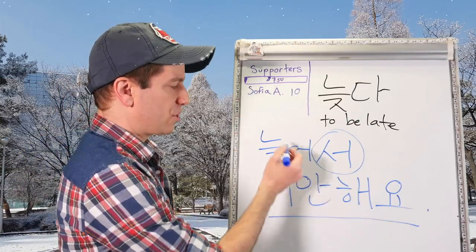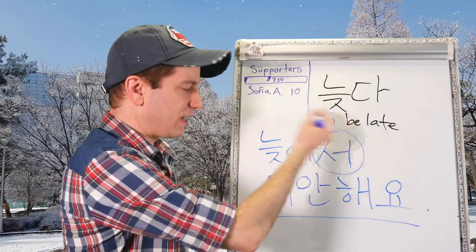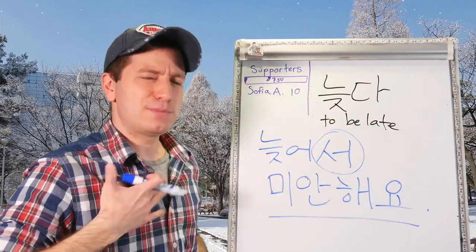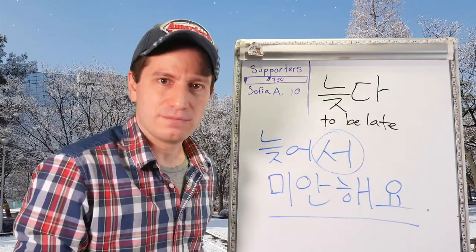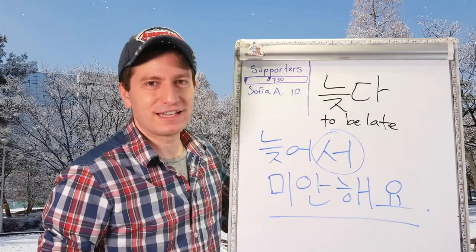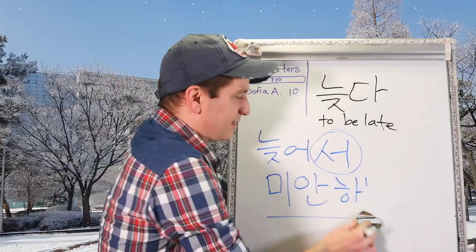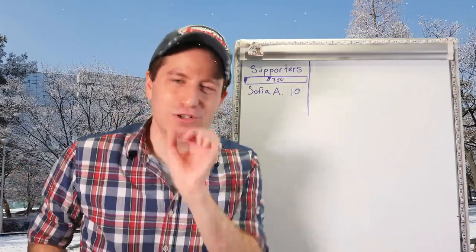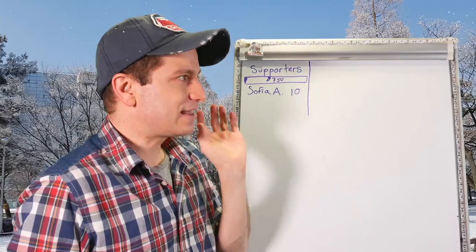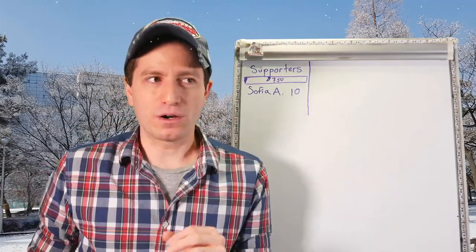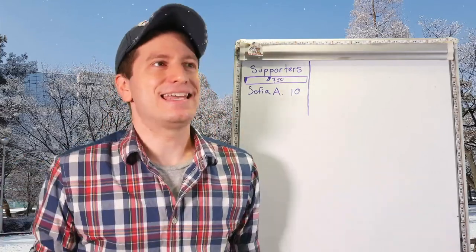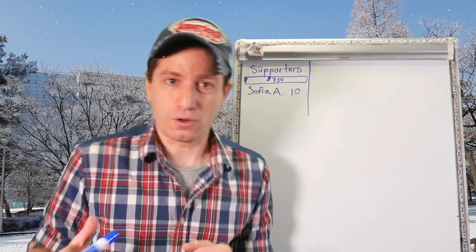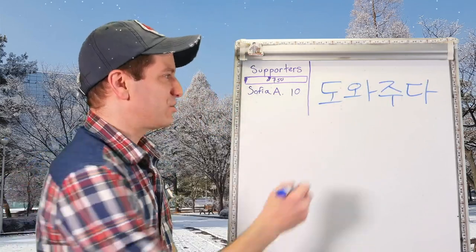늦어서 미안해요. I am late — because I am late, I'm sorry. Me being late makes me feel sorry. What about saying thanks for doing something? When you say 'thanks for,' what you're really saying is 'because you did something, I feel thankful.' 도와주다 means to help.